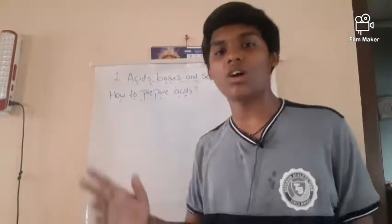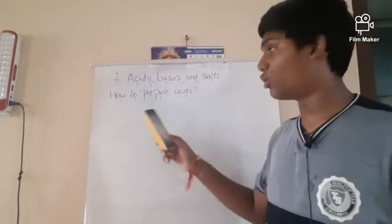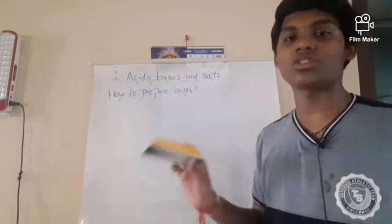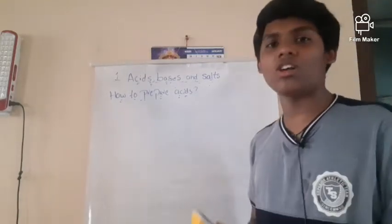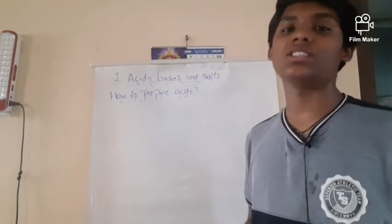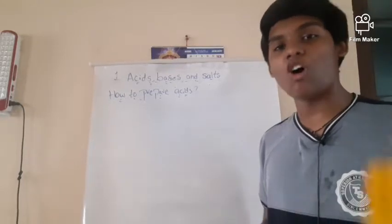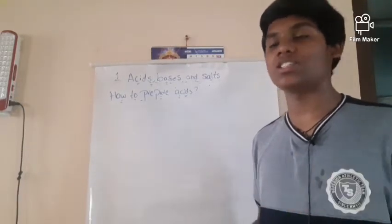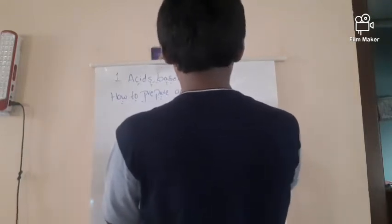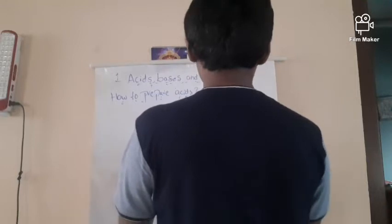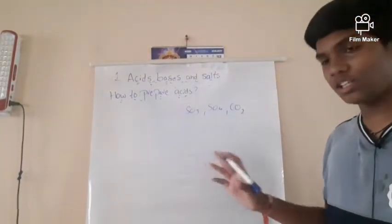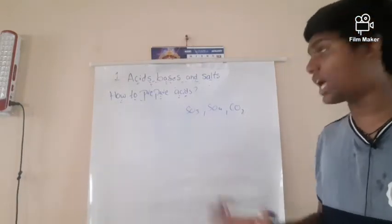So in what we discussed about how to prepare acids, the first method involves non-metal oxides. All non-metal oxides are acidic oxides — they have acidic nature. For example, SO3, SO4, and CO2 are all acidic in nature. These are non-metal oxides and they are acidic oxides.